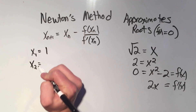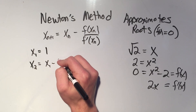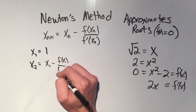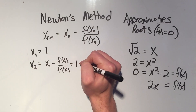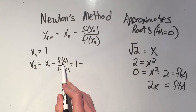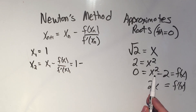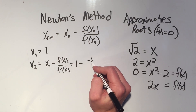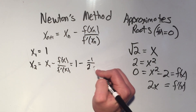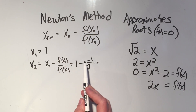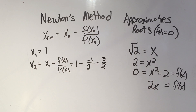Now I'll find x2 by plugging x1 into Newton's formula. x1 was 1, so it's 1 minus f(1) over f'(1). That's 1 squared minus 2, which is negative 1, over 2 times 1, which is 2. So I'm getting 1 minus negative one-half, which is 1 plus one-half, or 3/2. That's my x2.